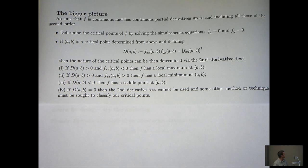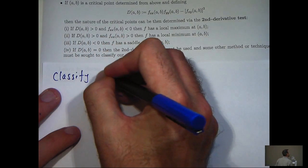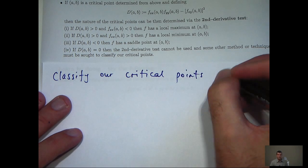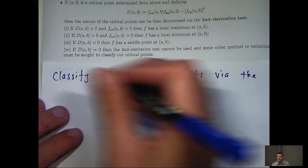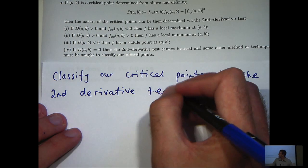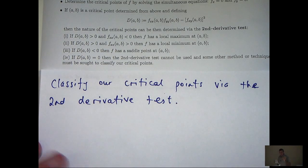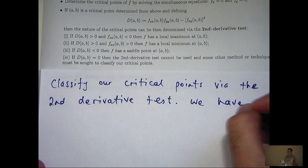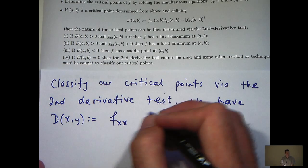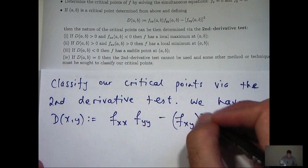To classify our critical points via the second derivative test, let's calculate this general d at a general point (x, y). The subscripts here refer to the second derivative.